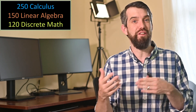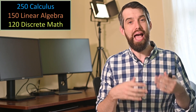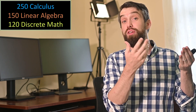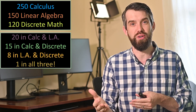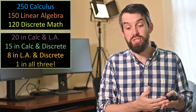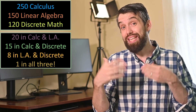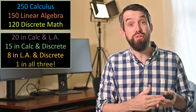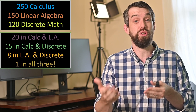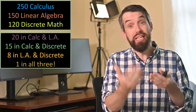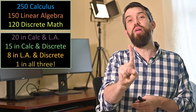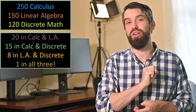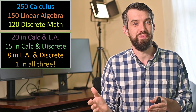So what I did next was investigate how many students were in both of, say, calculus and linear algebra, and I went down the line. It turned out that I had 20 students who were in calculus and linear algebra, 15 students who were in calculus and discrete math, 8 students who were in linear algebra and discrete math, and one rather enterprising student who was in all three at the same time.